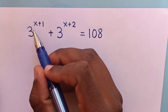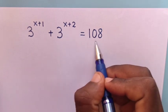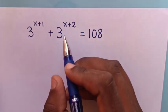Hello, how to solve 3 power x plus 1 plus 3 power x plus 2 is equal to 108. To find the value of x from this equation.